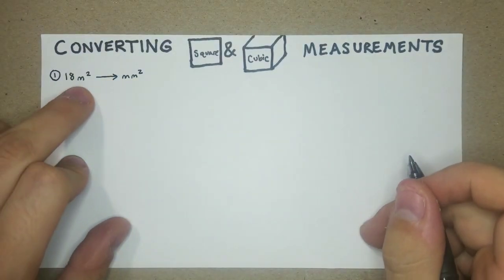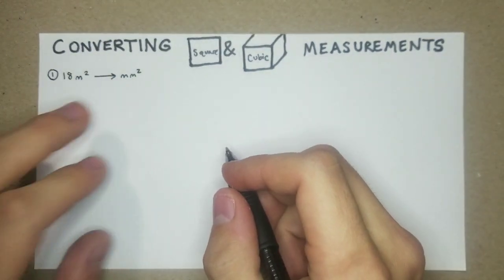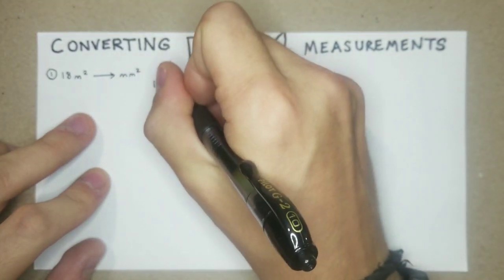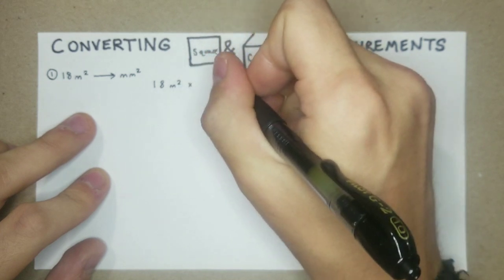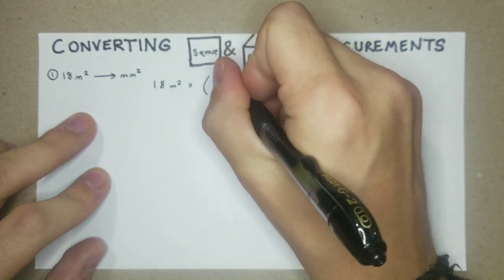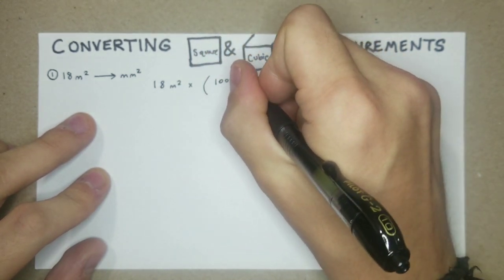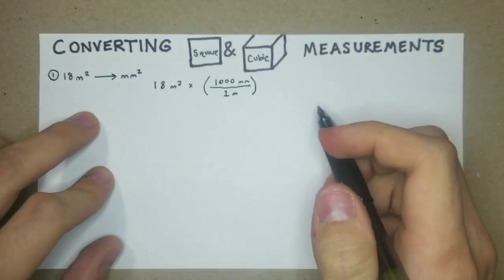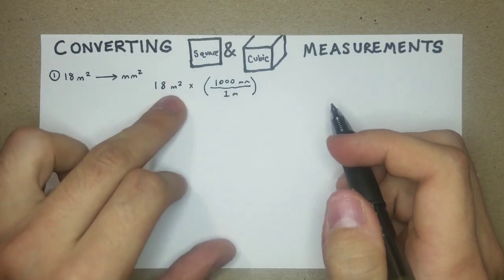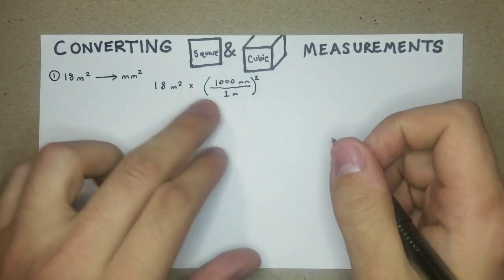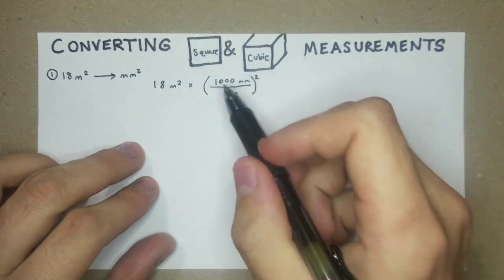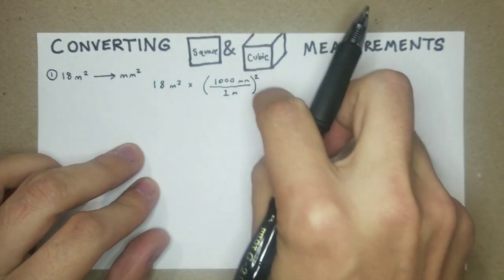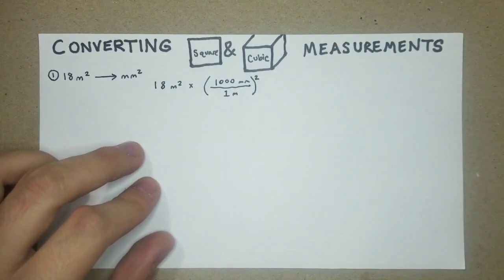First one, we're gonna go from 18 square meters to square millimeters. Basically, we're gonna set it up just like we did with the other ones. But so we know there's a thousand millimeters per one meter. But since this is squared and this is squared, we're just going to square that because we'd need to do this twice. Another way you could write it is just take this fraction and put it right next to it, multiply it, but this probably is the simplest way.